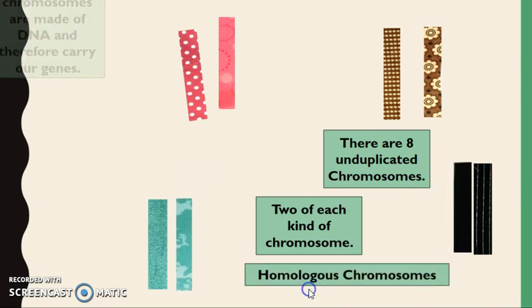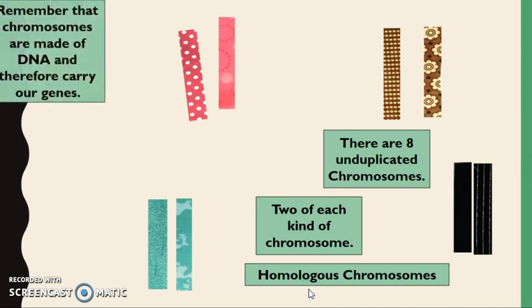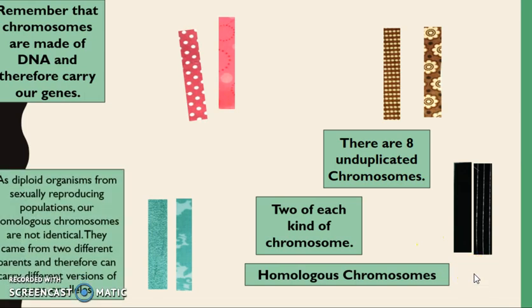It's important to remember that our chromosomes carry our genes. When we look at us as diploid organisms, we have two copies of each gene on autosomal chromosomes. This isn't true for sex chromosomes, because males only have one X.